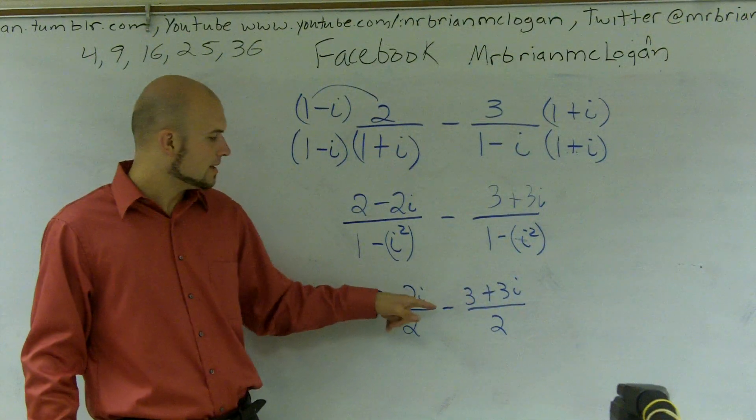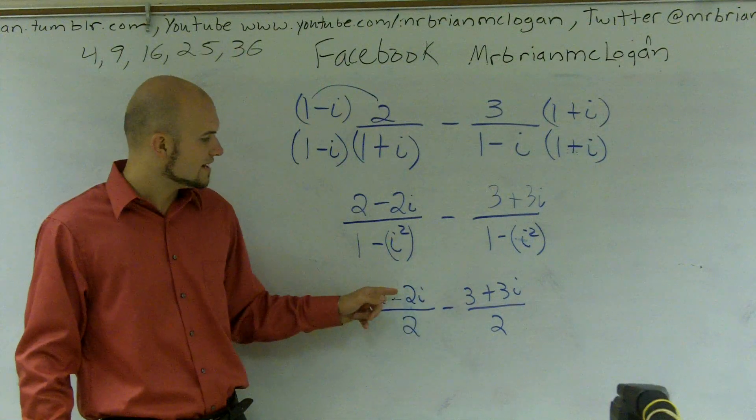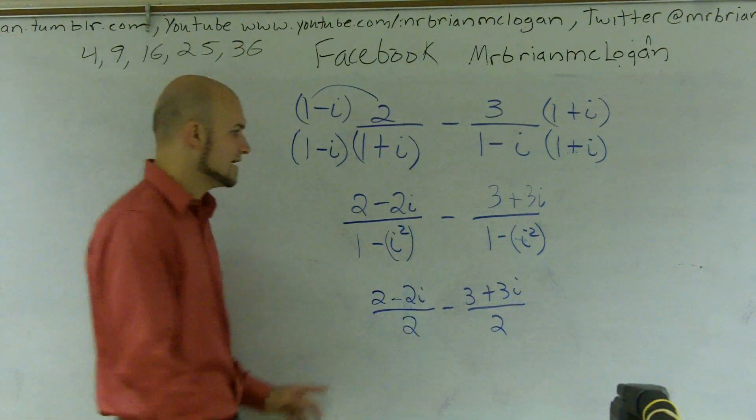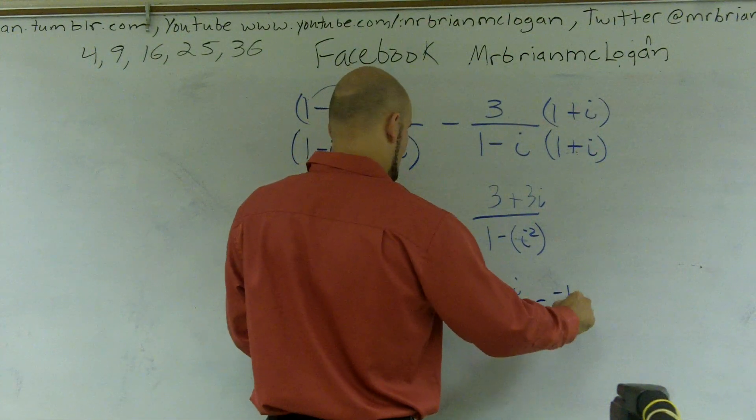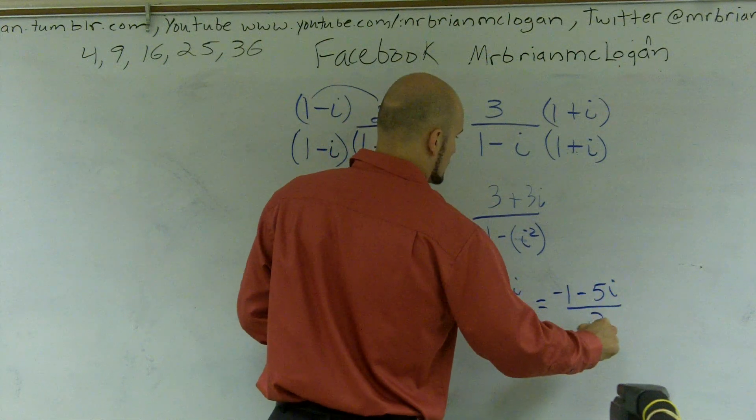So I have two minus three, which is going to give me a negative one. And I have a negative two minus three, which will give me a negative five. So my final answer is going to be a negative one minus five i all over two.